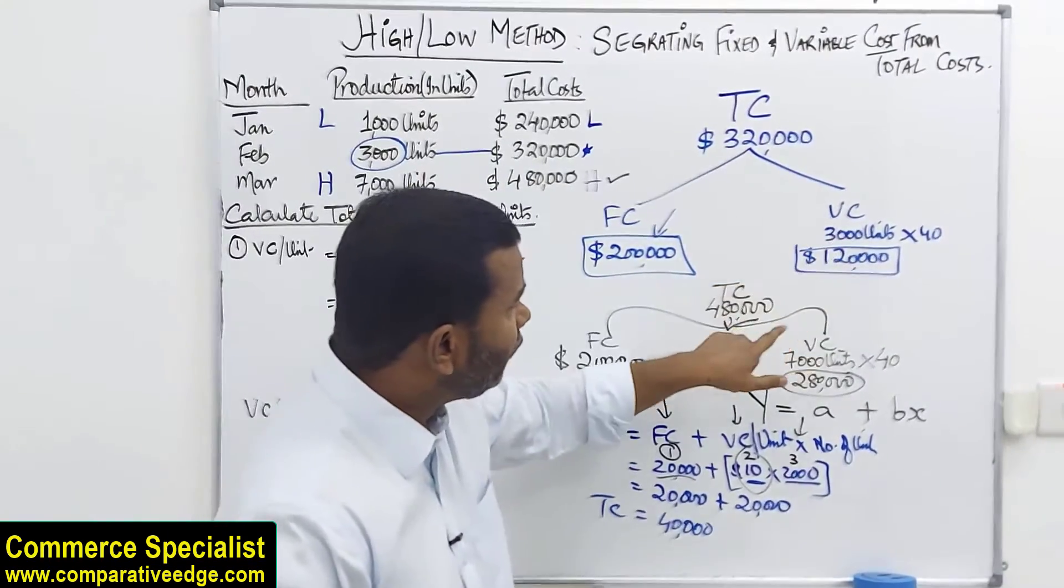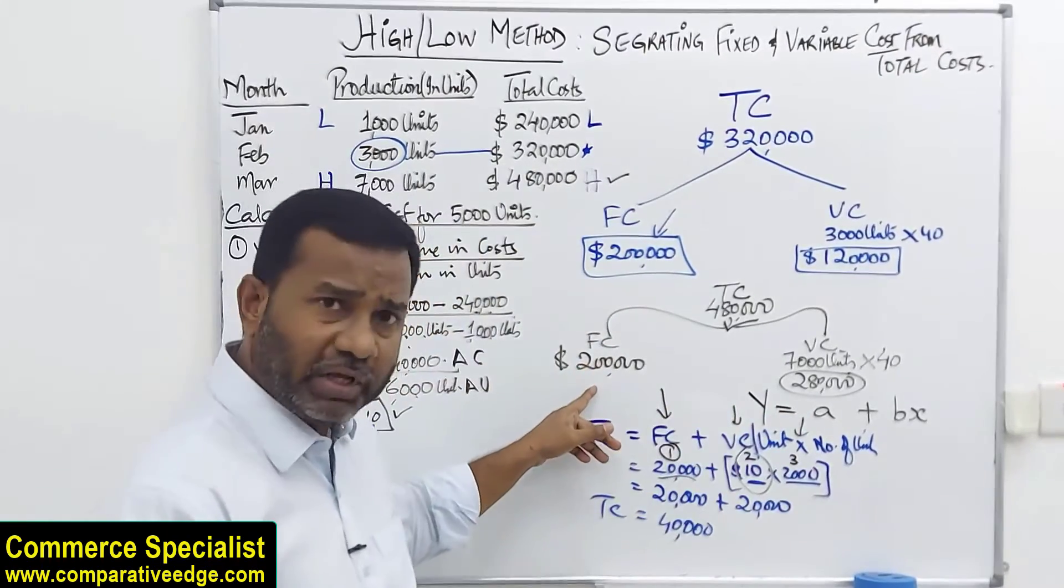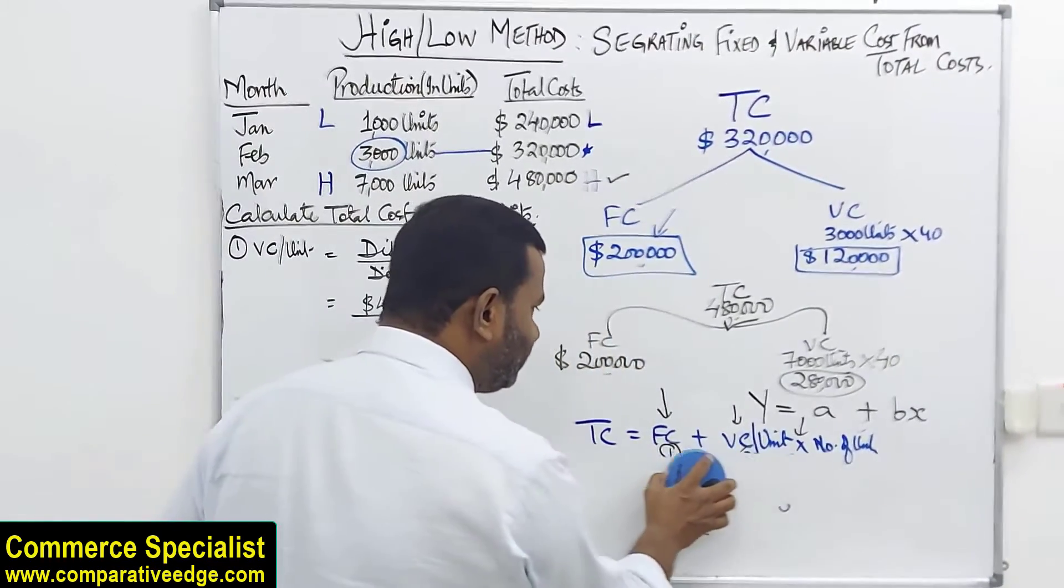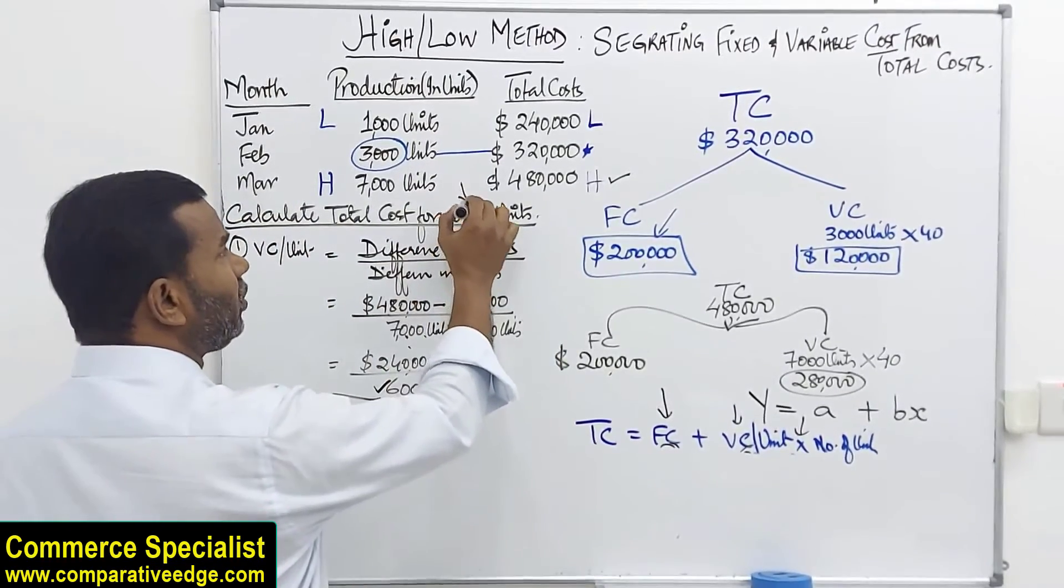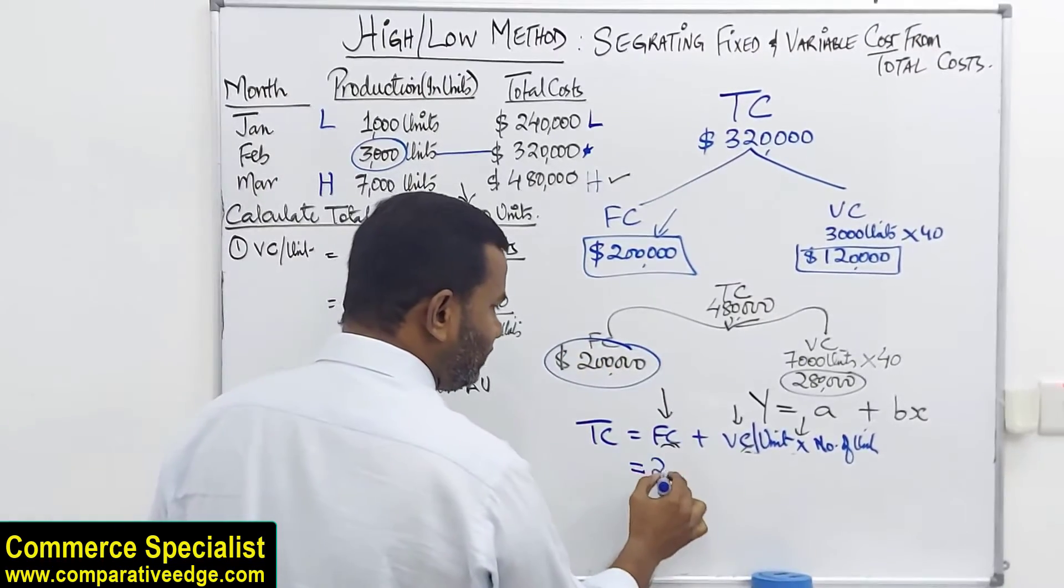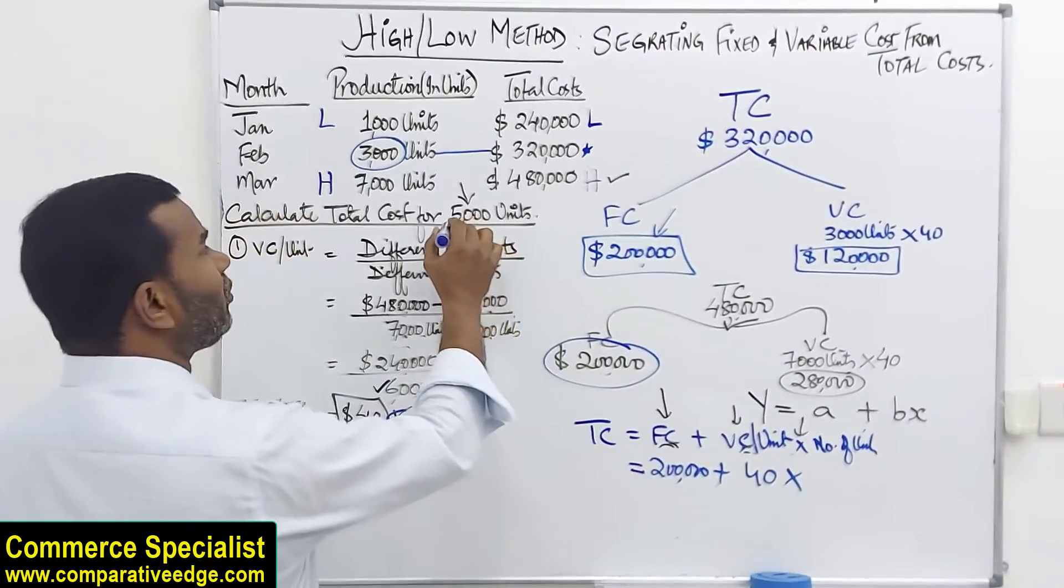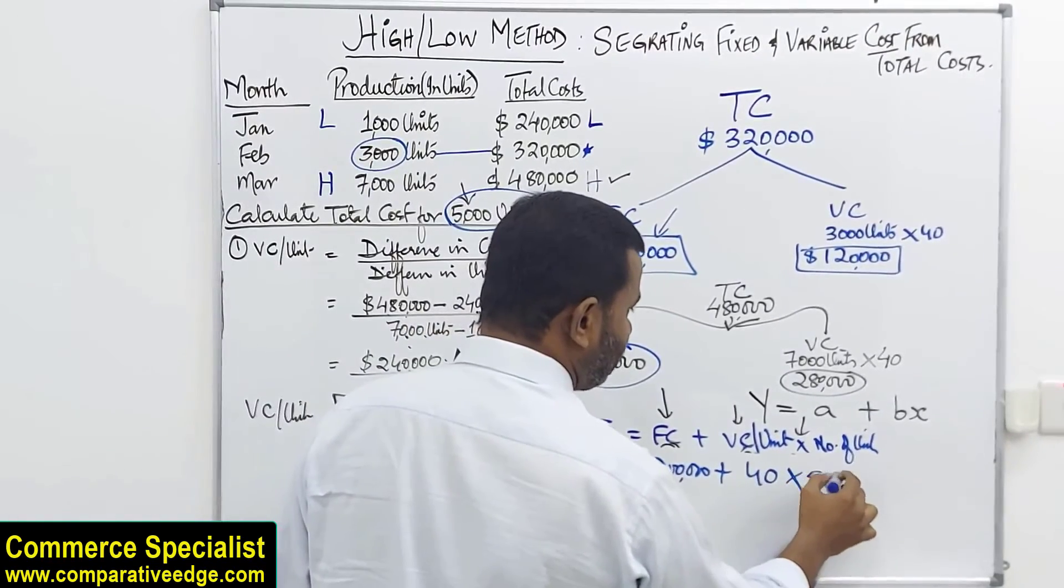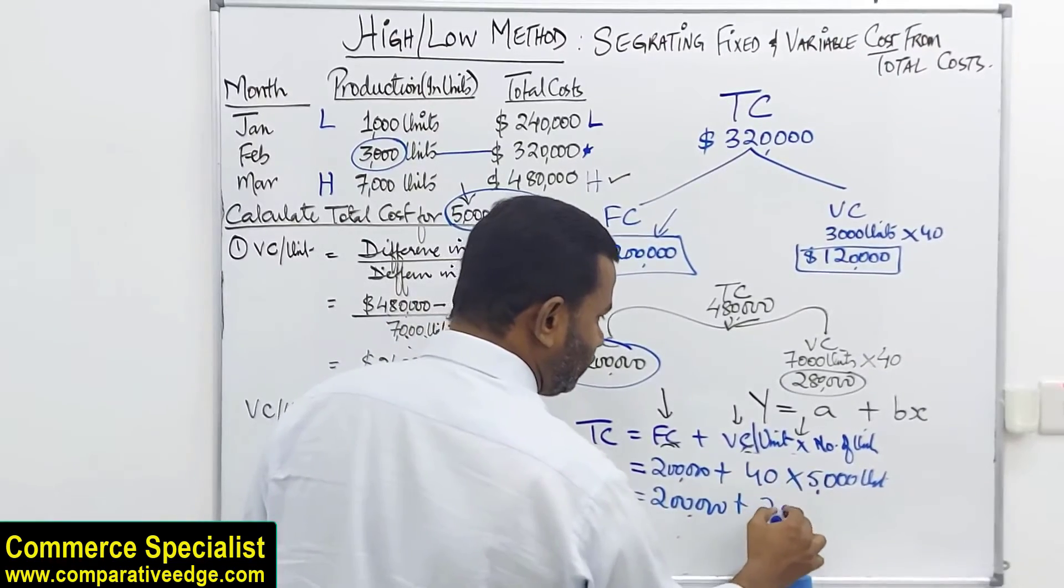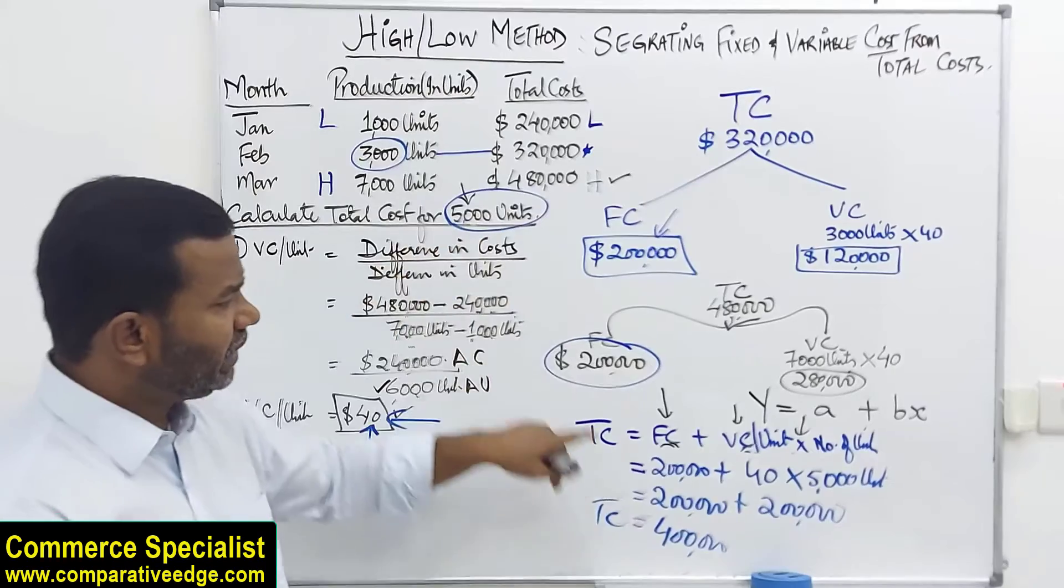Now that we know that fixed cost is $200,000 and variable cost is $40, we are able to use the same formula and calculate total cost. Because we have been asked to calculate total cost for 5,000 units. So yes, we can plug the numbers in. Fixed cost we just calculated: $200,000. Variable cost of 1 unit is $40. The question says calculate total cost for 5,000 units. So for 1 unit it is $40. I am multiplying by 5,000 units. Fixed cost remains as $200,000. When you multiply this, this comes to $200,000 again. So your total cost comes to $400,000. The total cost of 5,000 units is $400,000.